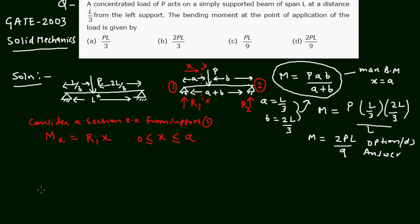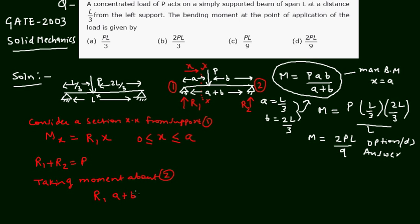The bending moment Mx = R1·x, valid for 0 ≤ x ≤ a. We find R1 using equilibrium: R1 + R2 = P. Taking moments about support 2: R1·(a+b) = P·b, giving R1 = Pb/(a+b). Similarly, R2 = Pa/(a+b).